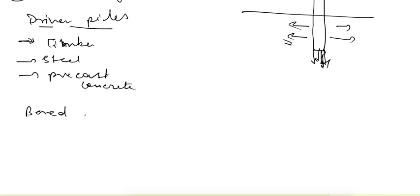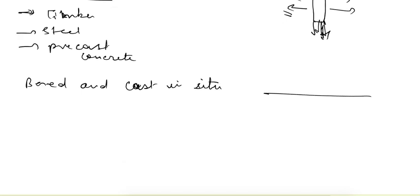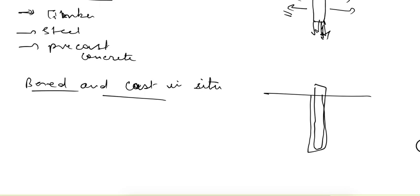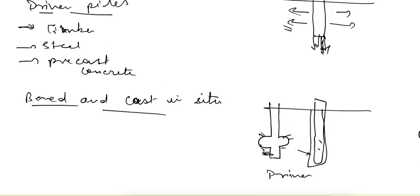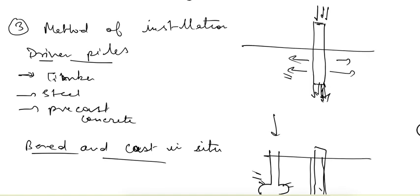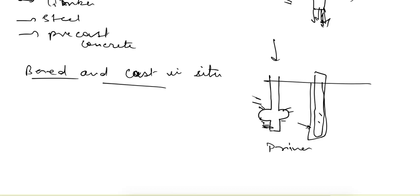Next it can be bored and cast in situ. In this case, we first bore a hole by drilling in the area, then fill it with concrete. That way we make our bored and cast-in-situ pile. In this case, we can also make the under-reamed pile, where a bulb is present inside the pile offering extra resistance. This kind of pile cannot be made using the driven method — we cannot first make this shape and then insert it. We have to first bore a hole and then fill it with concrete.